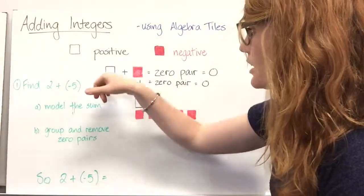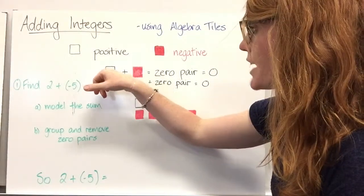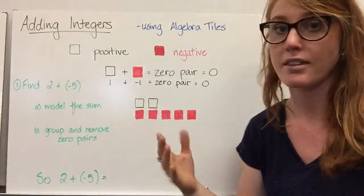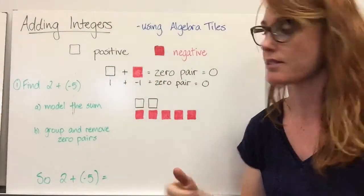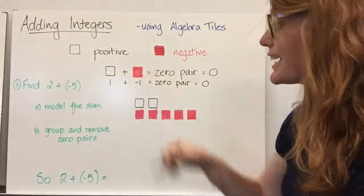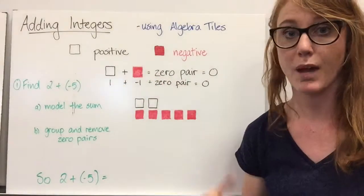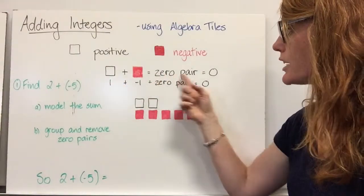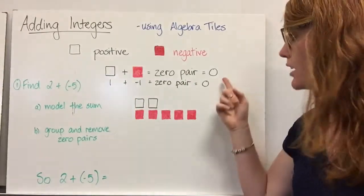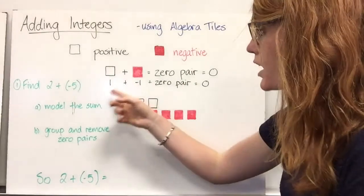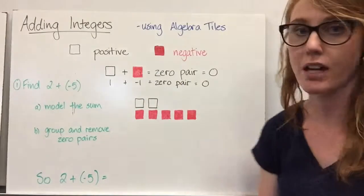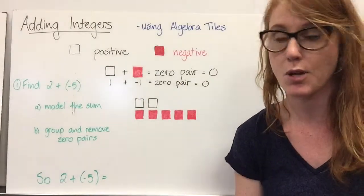So if we have a positive one and a negative one, they are opposites. A positive one plus a negative one — we're adding the opposites, so it creates a zero pair, of which the value is zero. So one plus negative one is a zero pair; the value is zero.